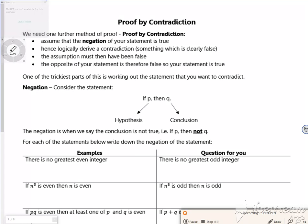So it says assume the negation of your statement and then hence logically derive a contradiction, something which is clearly false. The assumption must have been false, so the opposite is true. So to show that something's true, you show that its opposite is false.